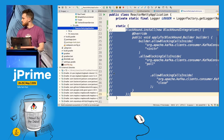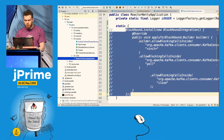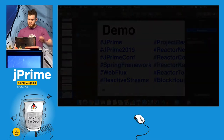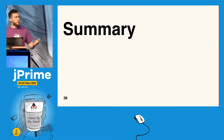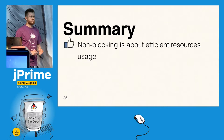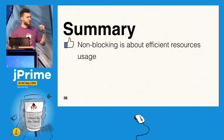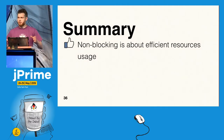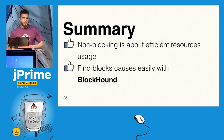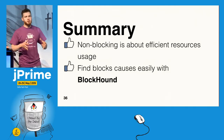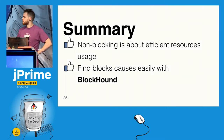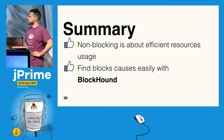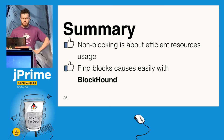Let's do a quick summary of what we just learned. Non-blocking is really important — it's about efficient resource usage. If you want to build a really efficient application, you must use everything in a non-blocking way. And you can easily figure out what parts of your application are blocking using BlockHound. You can integrate it in your test or validation phase and be sure there is no blocking code — even in third-party libraries.